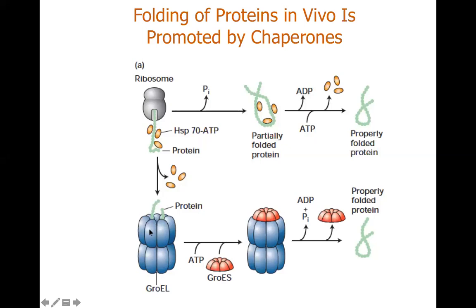The internal linings of the GroEL chaperonin are lined with hydrophobic residues. The polypeptide chain is internalized inside the GroEL lumen. After that, GroES acts as a co-chaperonin, functioning as a lid to close the inlet of the barrel. The purpose of this is that misfolded proteins will not be able to exit, ensuring the protein is properly folded before it can exit.